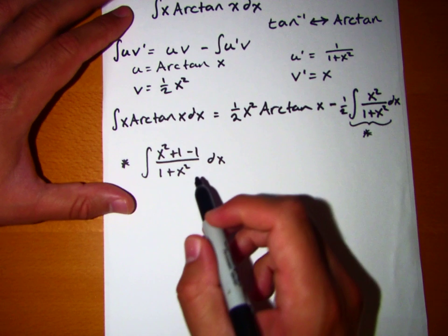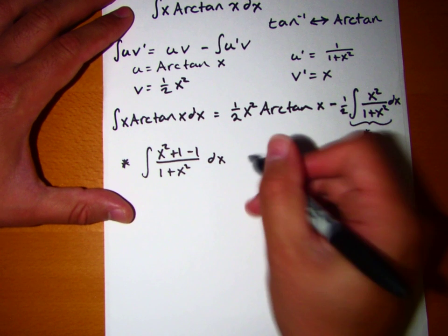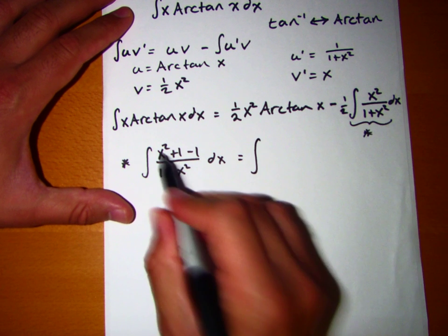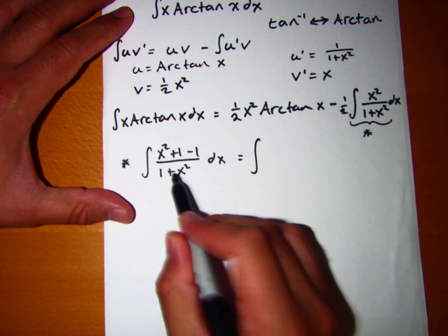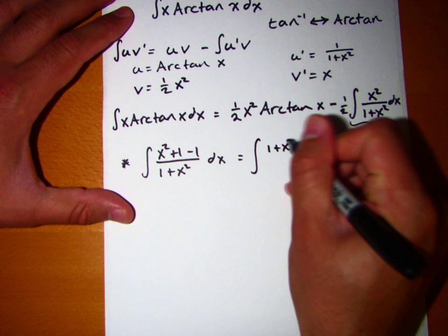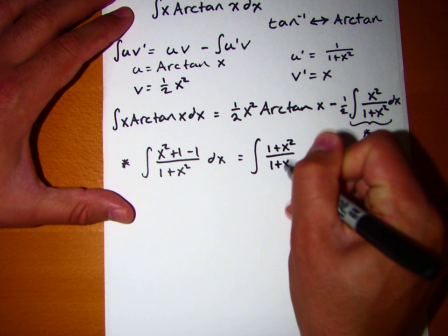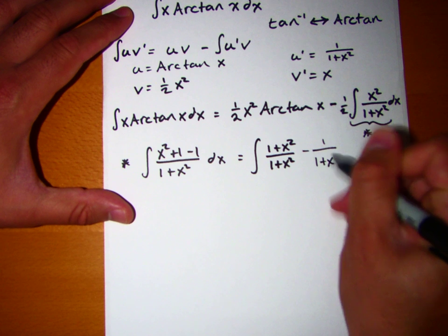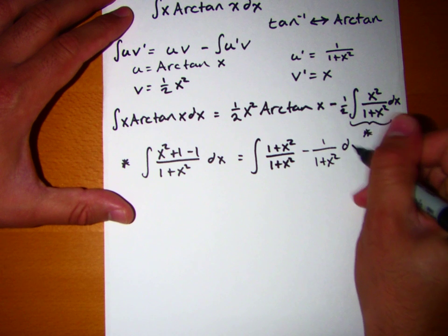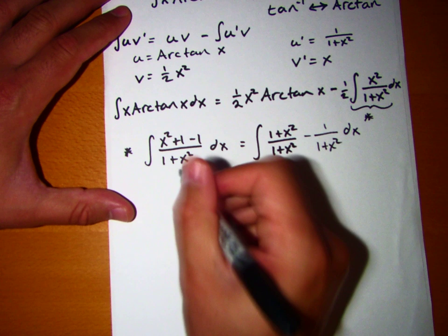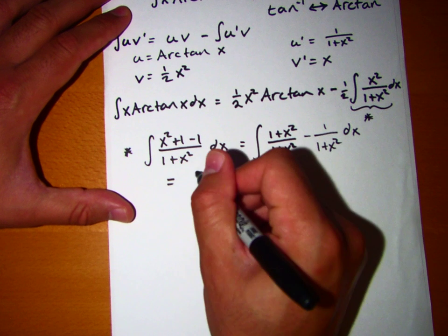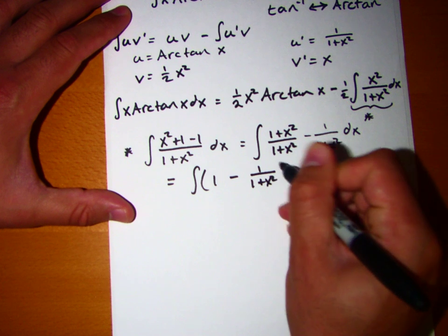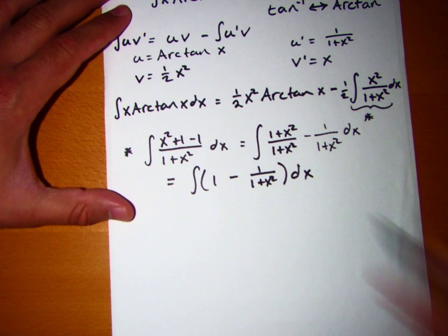We can break this up a little bit and see that this just equals 1 plus x squared over 1 plus x squared, which is just 1, minus 1 over 1 plus x squared. And we see that this is just equal to the integral of 1 minus 1 over 1 plus x squared dx.